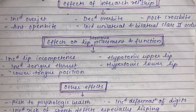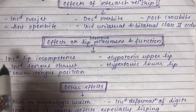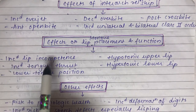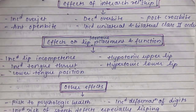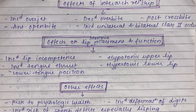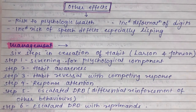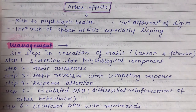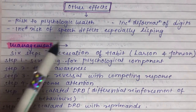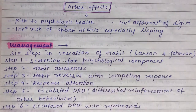Effects on lip and tongue placement include increased lip incompetency, hypotonic upper lip, hypertonic lower lip, increased tongue thrust, and lower tongue position. There is also risk to psychological health, increased deformation of digits appearing exceptionally clean, and increased risk of speech defects.